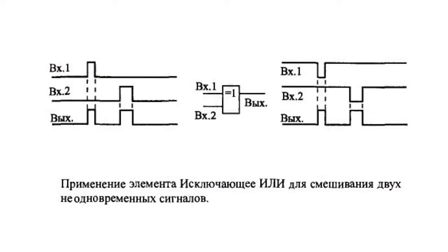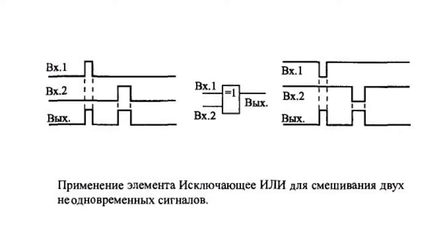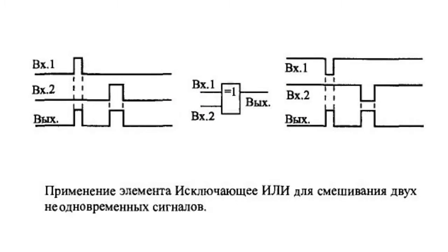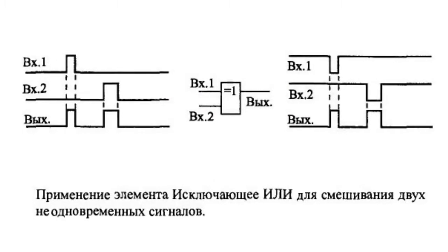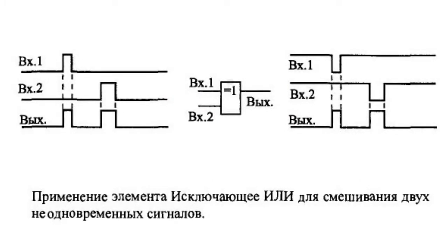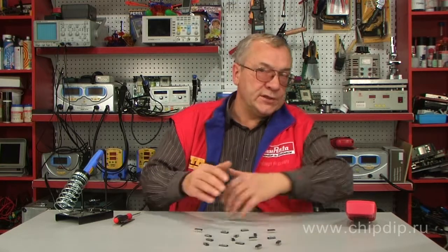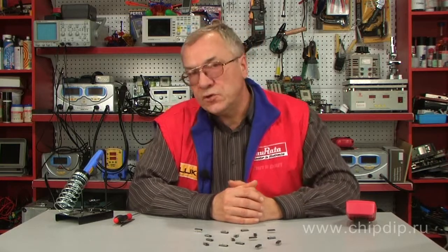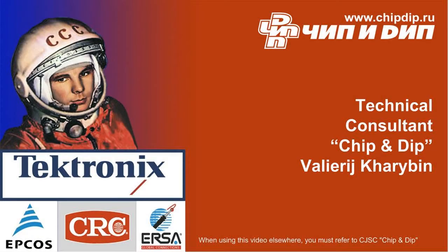One more application of the exclusive OR gate is short pulse generation, regardless of the input signal's leading edge. It is irrelevant whether the input signal's leading edge is positive or negative — a positive pulse will be generated at the output. The input signal is delayed by a capacitor or a circuit of elements, after which the source signal and its delayed copy are transmitted to the exclusive OR gate inputs.